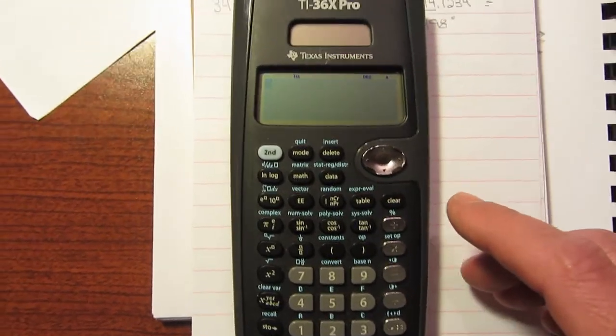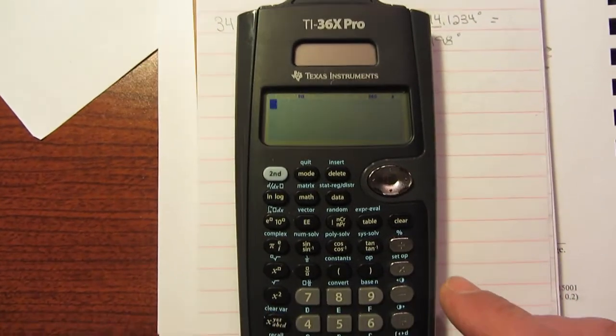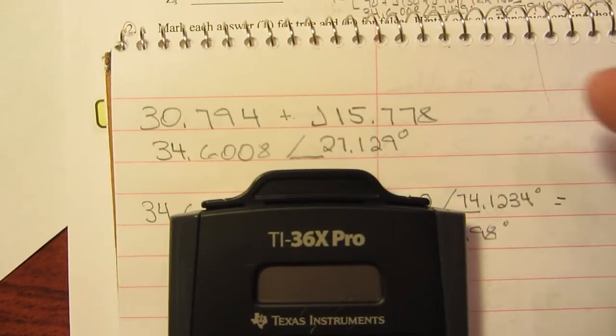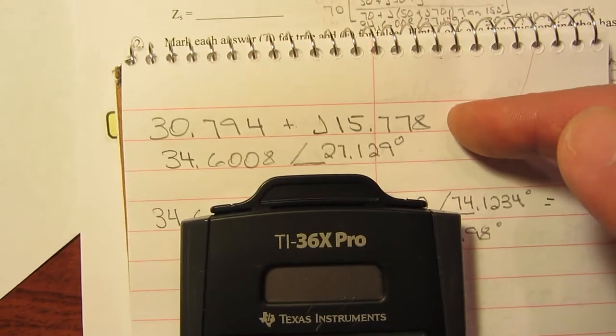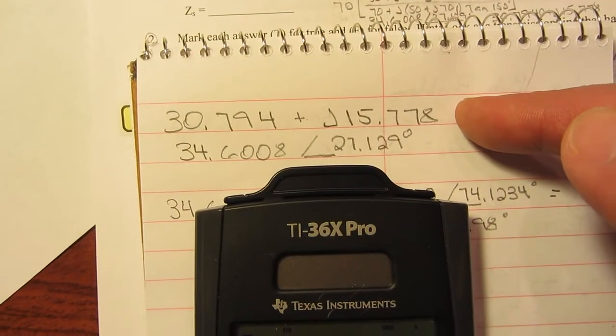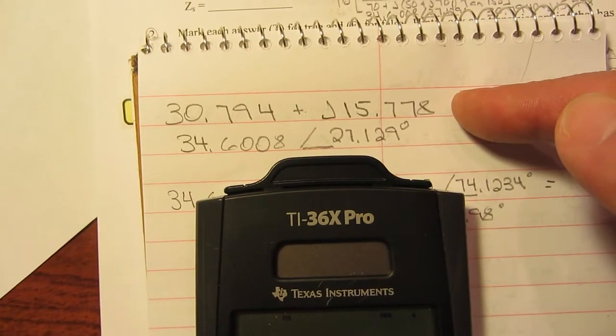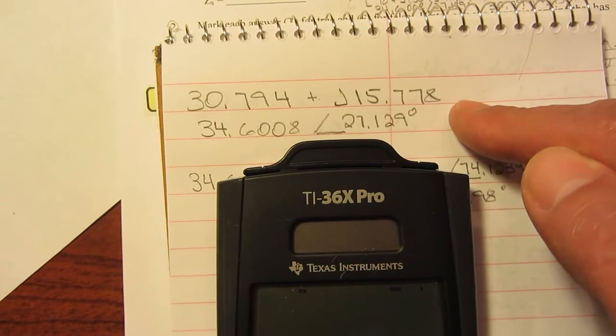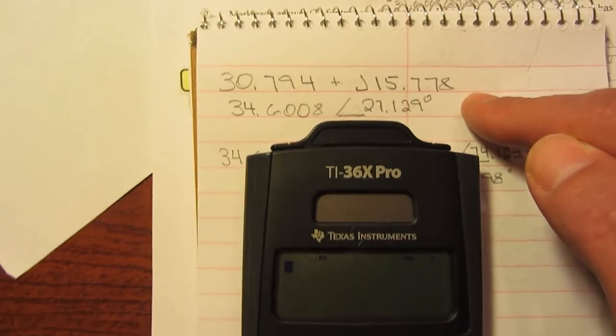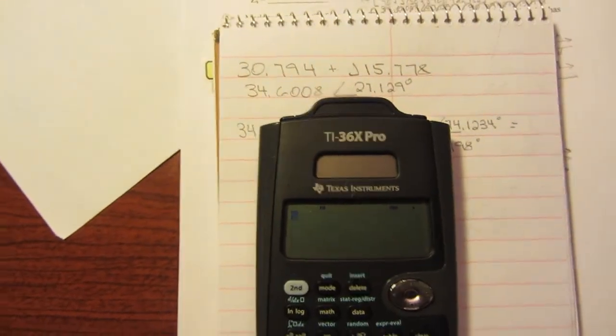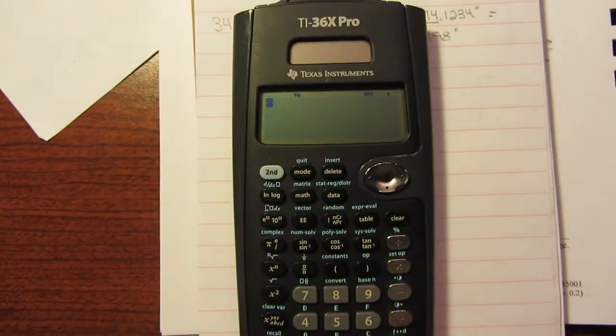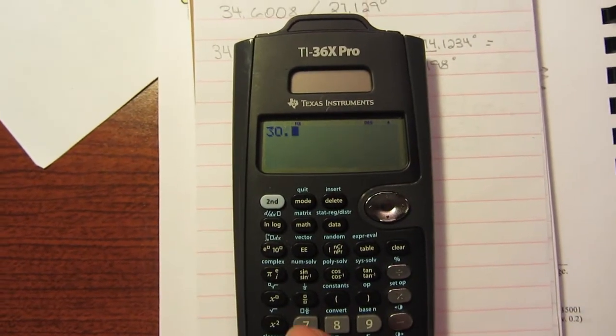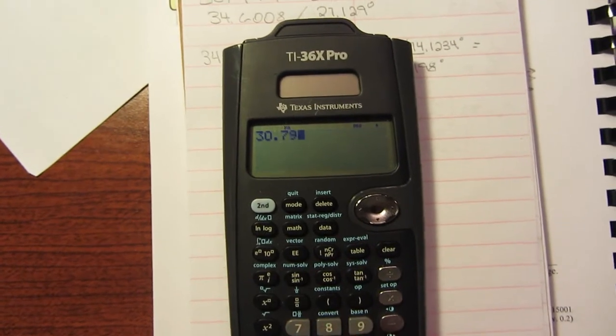So here, what's pretty cool about this is I've got a value here, this first line, in rectangular. And typically you'd have to go to rectangular and it's a bit of a pain in the butt to convert some of this stuff. Anyhow, this thing will do it for you. I'm going to take that value of 30.794.